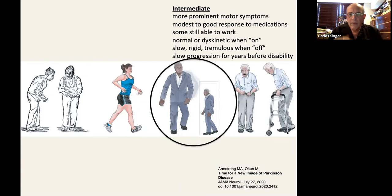You may also deal with what they have called the intermediate type. There are more prominent motor symptoms. There is modest to very good response to medications. Some are still able to work. They may even look normal or dyskinetic when they're on. Slow, rigid, tremulous when off. And they have very slow progression for years before they become disabled.